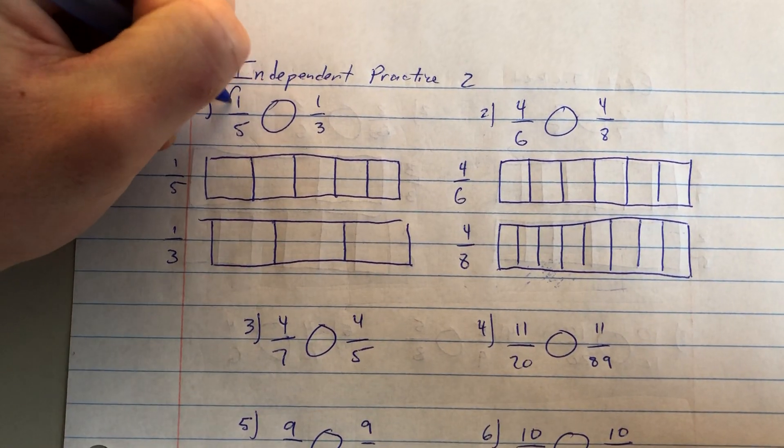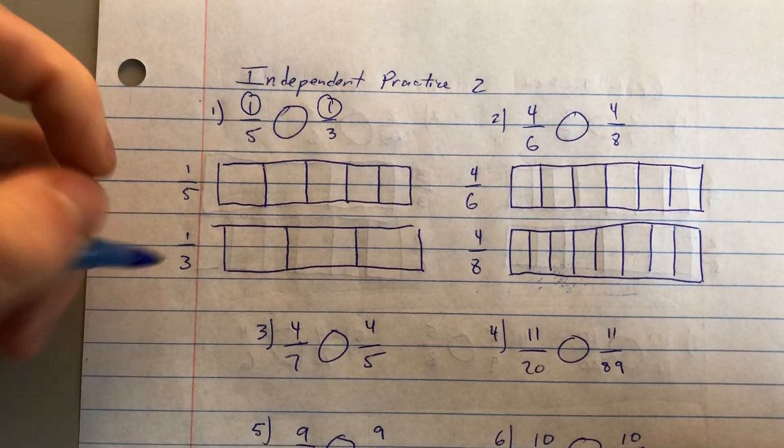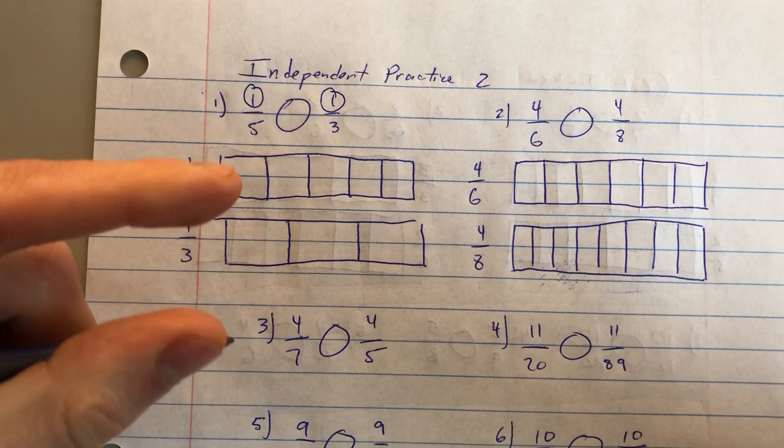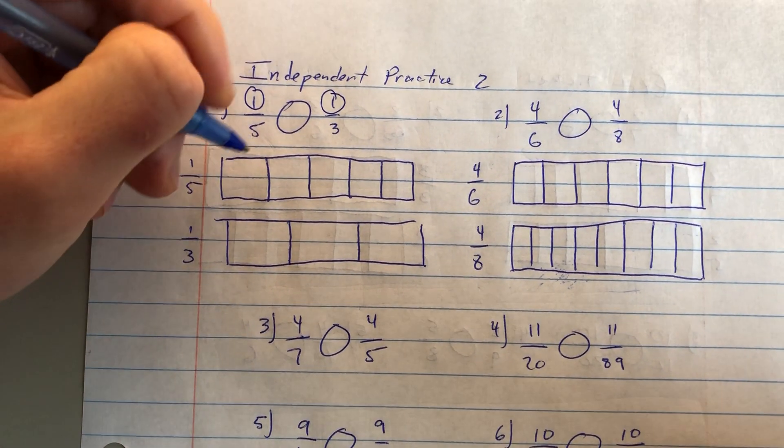Remember, if the numerators are the same, like they are here in one-fifth and one-third, the larger the denominator, the smaller the fraction. That's because you've cut up your whole into smaller and smaller pieces.